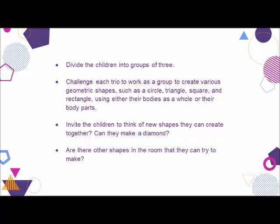The following activity offers children a chance to experience geometric shapes in groups of three, making it a cooperative social studies activity as well as a mathematical one. Divide the children into groups of three. Challenge each trio to work as a group to create various geometric shapes such as a circle, triangle, square, and rectangle using either their bodies as a whole or their body parts. Invite the children to think of new shapes they can create together. Can they make a diamond? Are there other shapes in the room that they can try to make? Later, you can encourage the children to work first in pairs and then in groups of four.